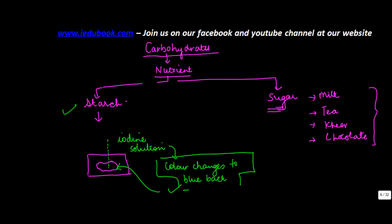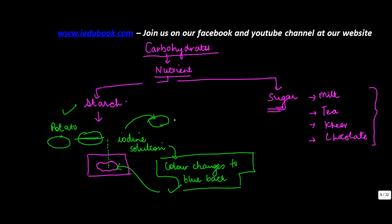If the color changes to blue-black, it means the food contains starch. If it does not change color, the food does not contain starch. For example, if you cut a potato into two halves and drop iodine solution on it, you will note the color changes to blue-black, confirming it contains starch.